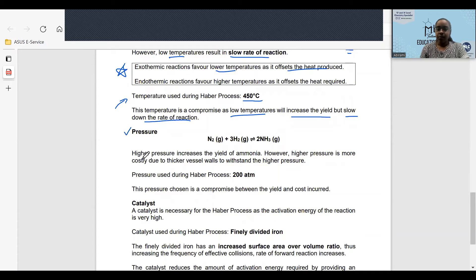Let's take a look at pressure. Higher pressure increases the yield of ammonia. However, higher pressure is more costly due to thicker vessel walls to withstand the higher pressure. Therefore, the pressure chosen is 200 atm for the Haber process. This is a compromise between the yield and the cost incurred.